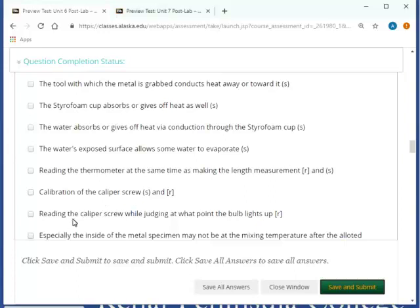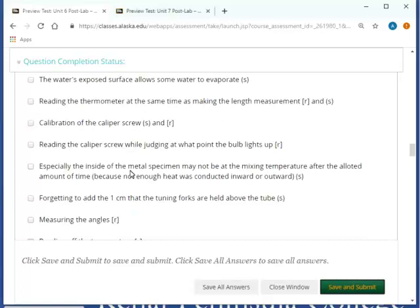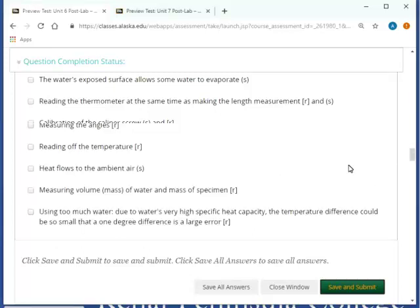There was no caliper screw. There still was no caliper screw. Especially the inside of the metal may not be a mixing temperature. That makes sense. Forgetting to add. There were no tuning forks. There were no angles to measure.